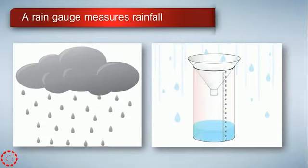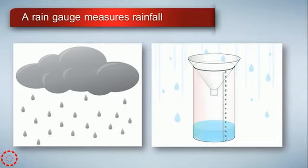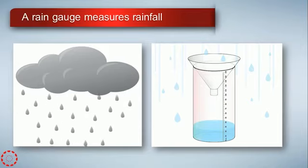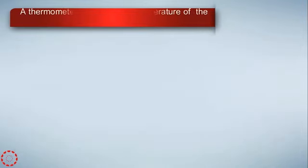A rain gauge measures rainfall. It tells us the amount of rain — for example, whether this year's rainfall was more than last year's.